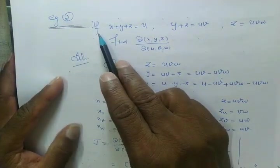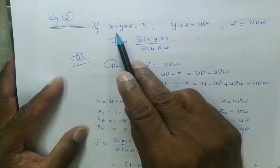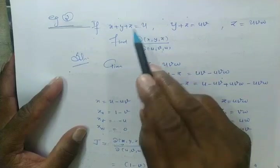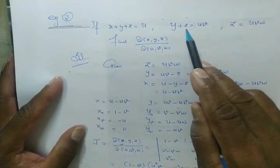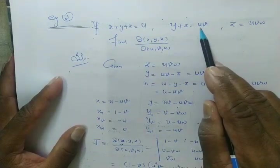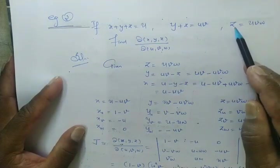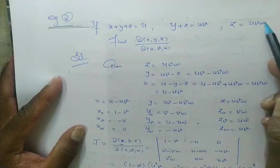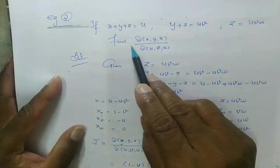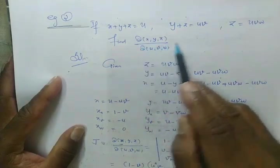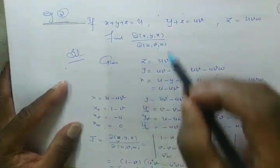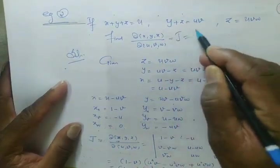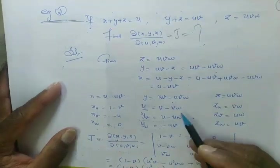Example 2. If x plus y plus z equals u, y plus z equals uv, z equals uvw — find the Jacobian. It is the Jacobian only, denoted by J.